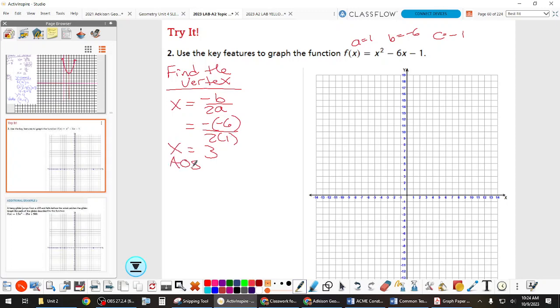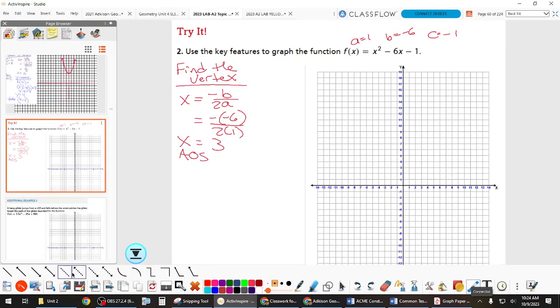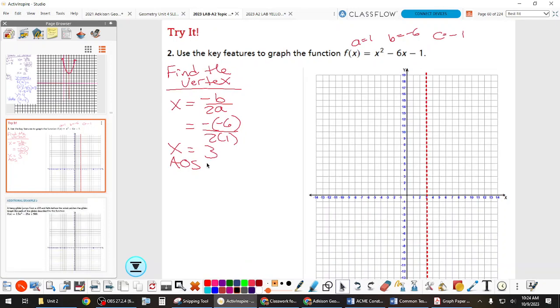That's also our axis of symmetry. We don't know anywhere yet. We don't have any idea where it is on here. We could analyze it a little deeper, but we might as well just solve for it. So, the y coordinate for the vertex, we say f of 3, and that's going to be 3 squared minus 6 times 3 minus 1. So 9 minus 18 is negative 9, minus 1 is negative 10. So we know our vertex now. Our vertex is at 3, negative 10.